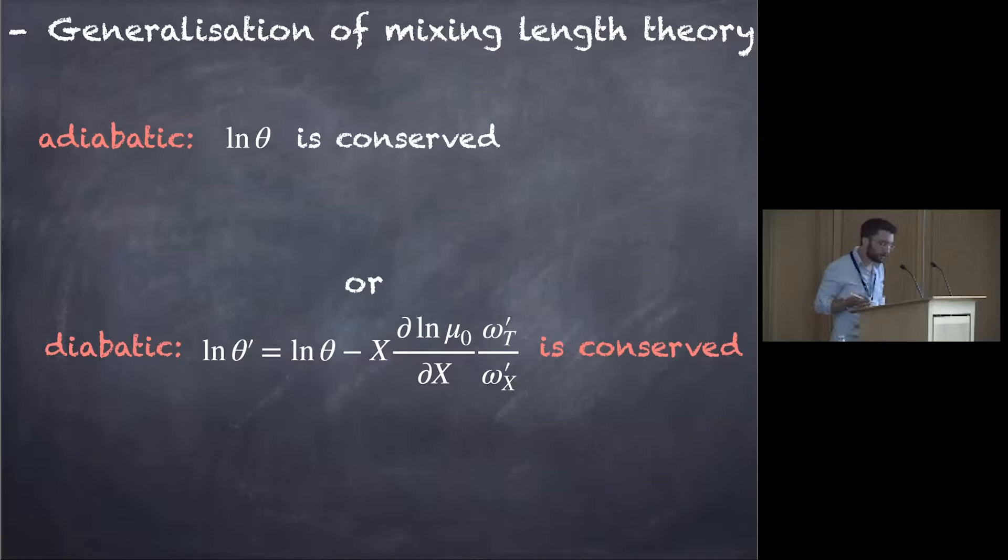It's not conserved in the diabatic case because of the source term, but in the linear regime, you can build a new quantity, a redefinition of entropy that is conserved in the linear regime and include these terms that depend on composition.